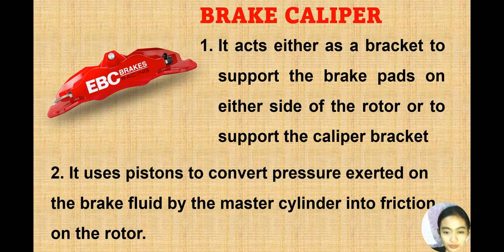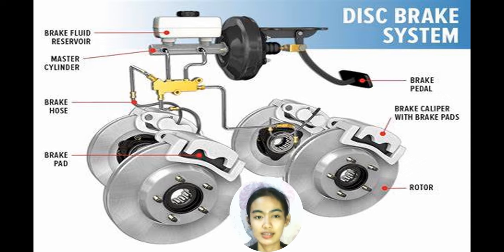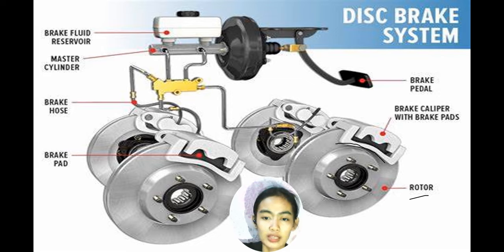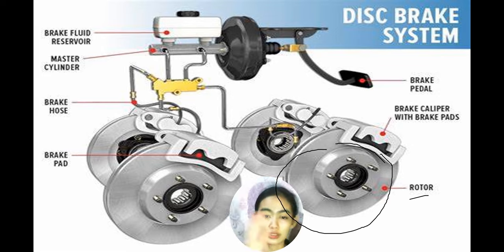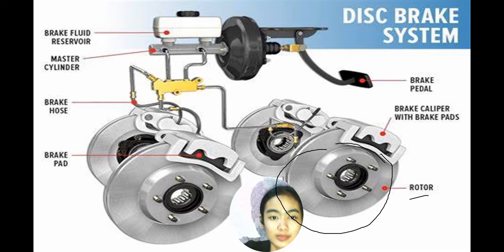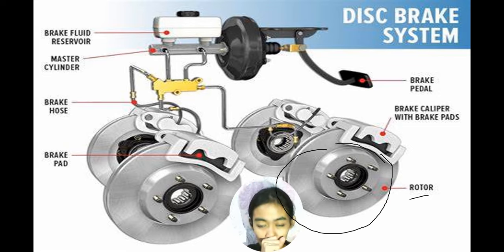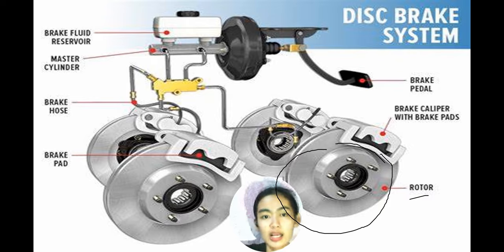This is the disc brake system. You can see the rotor here, and the brake pedal. The brake pads press against the disc brake when you stop. The brake caliper is like a bracket or cover that supports the disc brake.